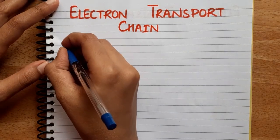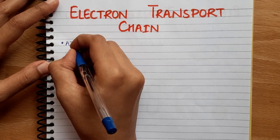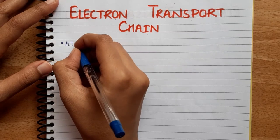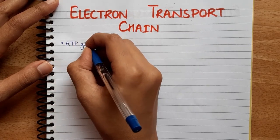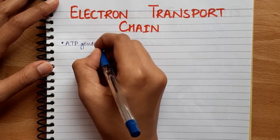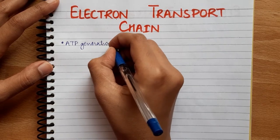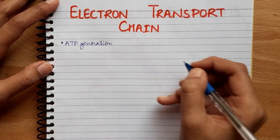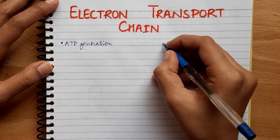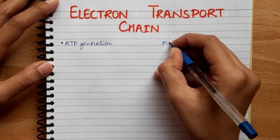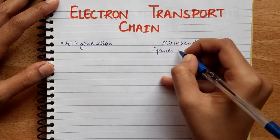So, electron transport chain — the main purpose of this chain is ATP formation and it is the last part of aerobic respiration. So where does ATP form in our body? In the mitochondria, which is also known as the powerhouse of the cell.